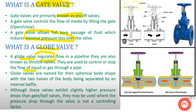In a gate valve, there is a handwheel which is attached to a stem. When this handwheel is rotated, the stem does a linear motion — an upward or downward motion. When the stem and wedge are in the downward position at the base, your gate valve is closed. When the stem or wedge is on the upward side, your valve is in the open situation.